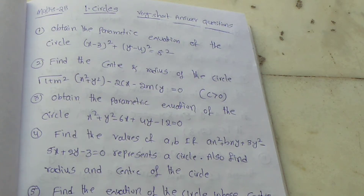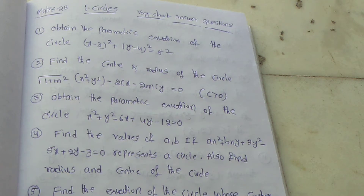Next question: Obtain the parametric equation of the circle x square plus y square minus 6x plus 4y minus 12 equal to 0.